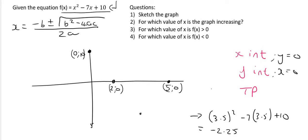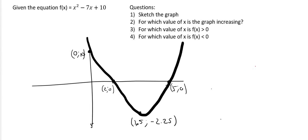So down here we can put a little dot and we can say that the x value was 3.5 and then the y value is minus 2.25 and there we have it. So now we can draw the graph and so now we can answer the question. So number two, for which value of x is the graph increasing?